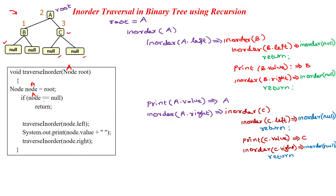So for A, we are checking: is it null? No, it is not null, so the null check is not executing. Then traverse inorder of node dot left. So for inorder of node dot left, A dot left is B. So B is passing to the method in the recursive manner.